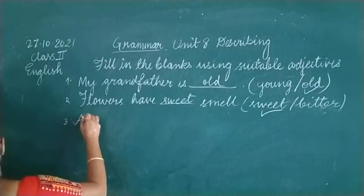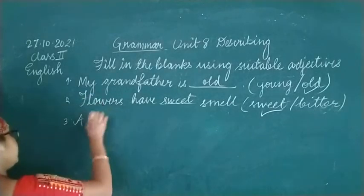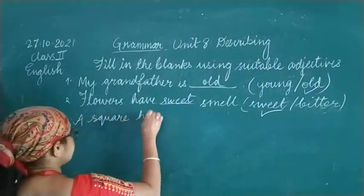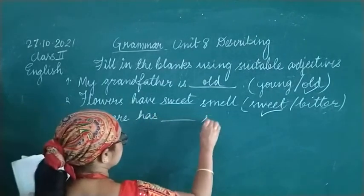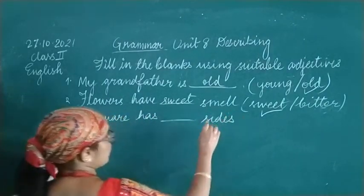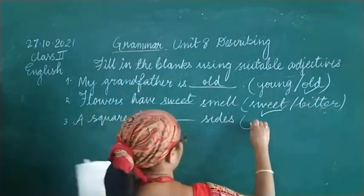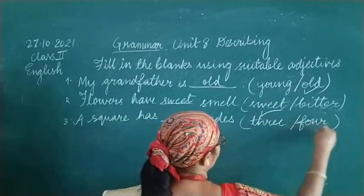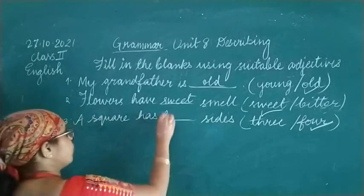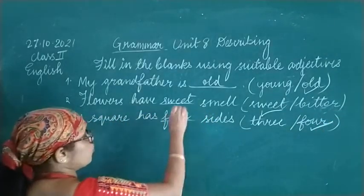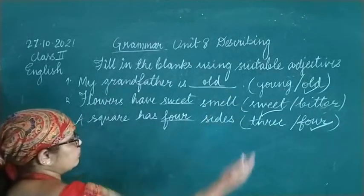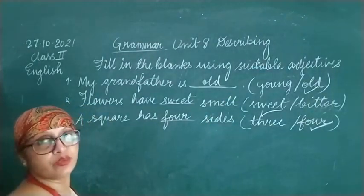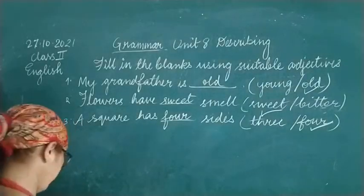Number three is: A square has blank sides. The options are 3 or 4. Children, the answer is 4. A square has 4 sides. All the words we are selecting here are adjectives — describing words.